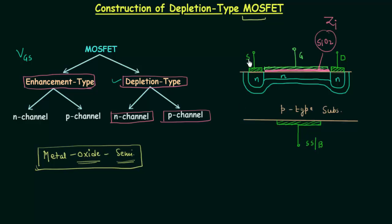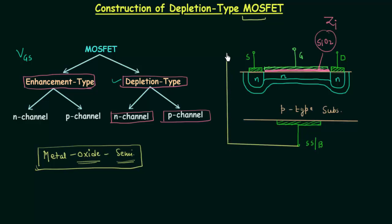Now let us talk about the terminals in MOSFET. In many cases we have four-terminal MOSFETs, but if the substrate or body terminal is connected internally to the source terminal, then we have three terminals: source as the first, gate as the second, and drain as the third. So we have both three-terminal and four-terminal MOSFETs.